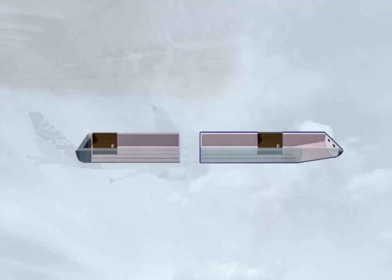The conditioning of the air in the forward and aft cargo compartments is fully automatic. The operation for these compartments is similar. We will look at the forward cargo compartment, then we will see the differences for the aft.